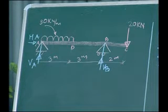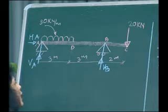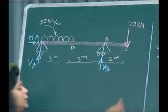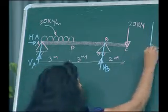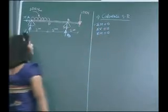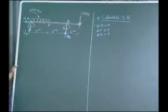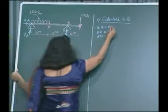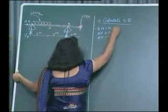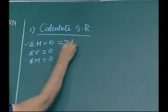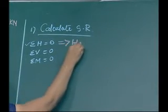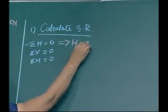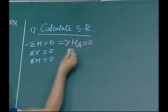Applying the first condition, sigma H equals zero: we can see there is no horizontal load acting on the structure, so HA equals zero.